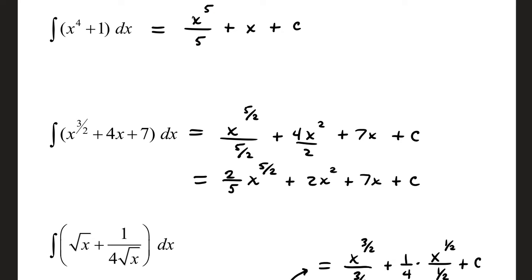You add one to the power, divide by the result. That's x to the fifth over five. You can also write that one-fifth x to the fifth, and then one is a constant. Just put a variable with that one, and don't forget your plus c.